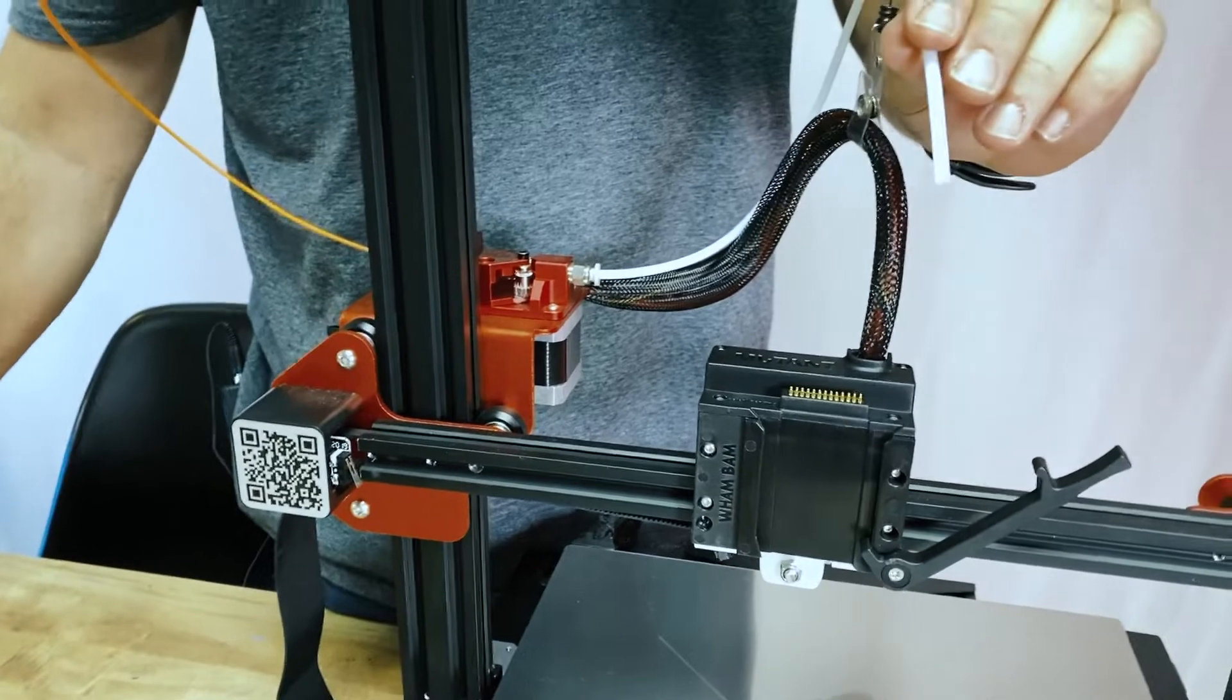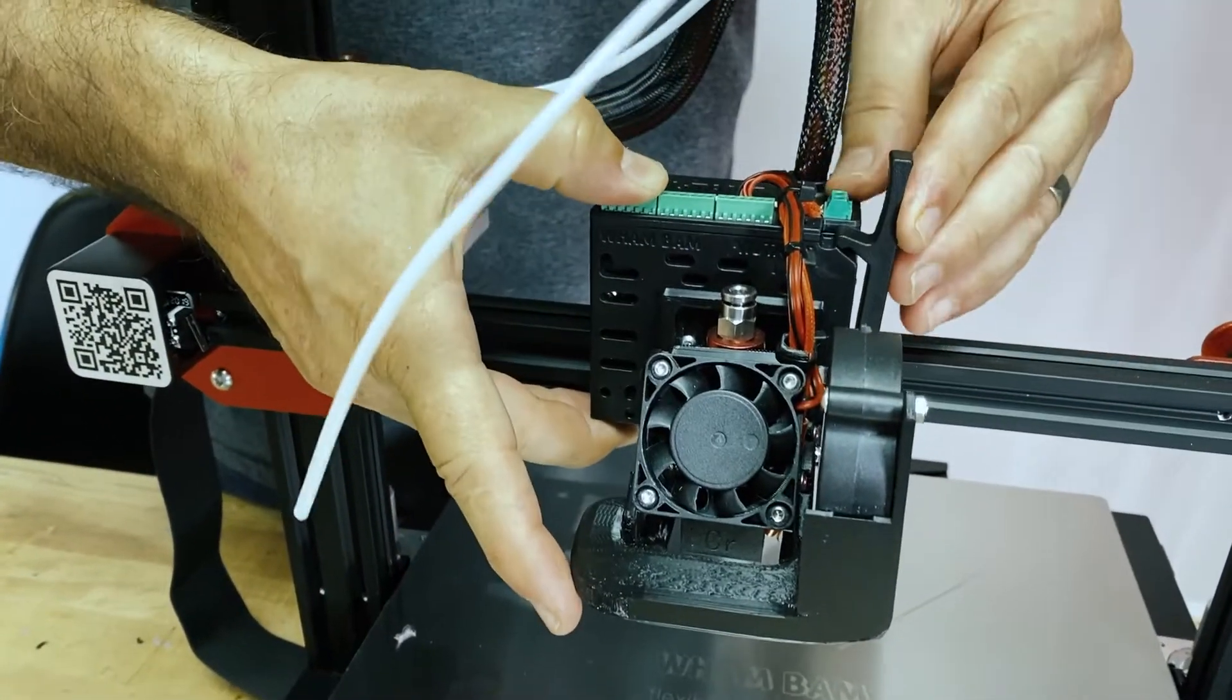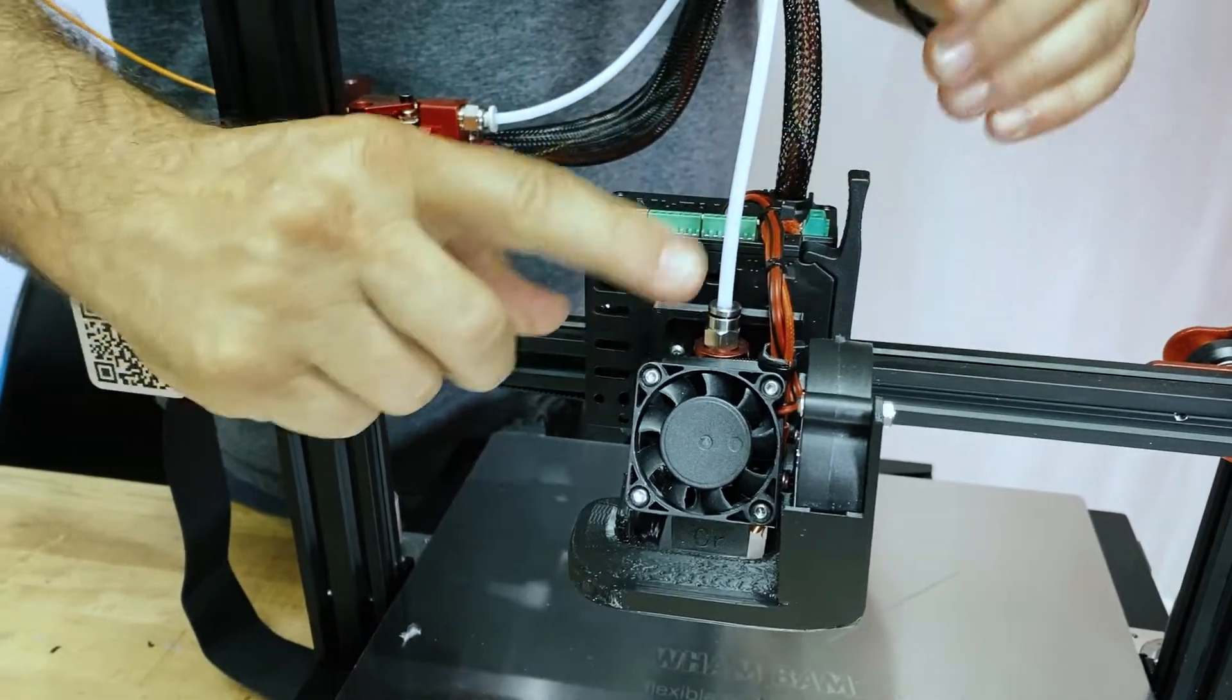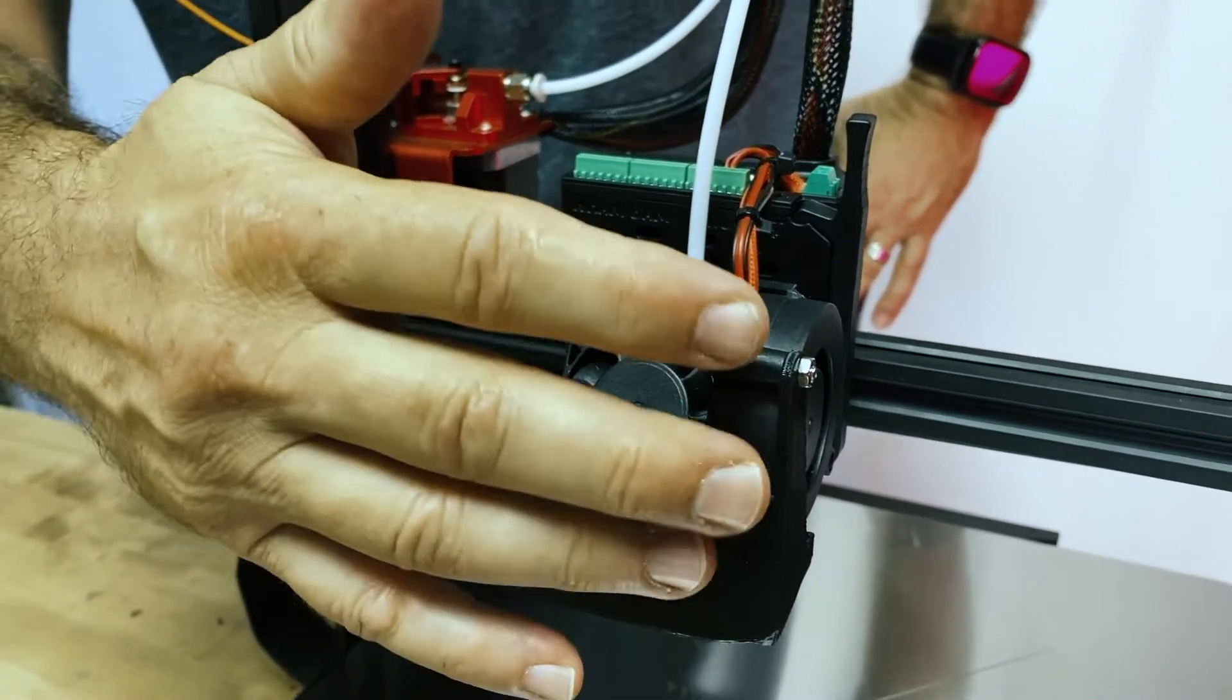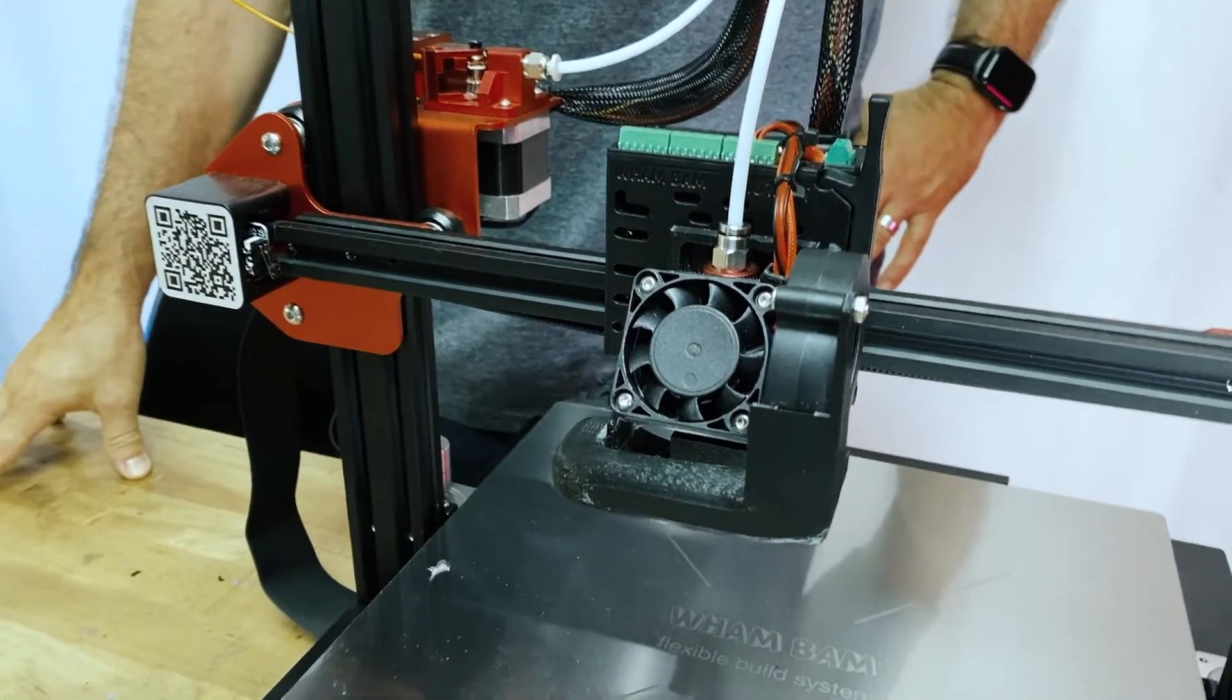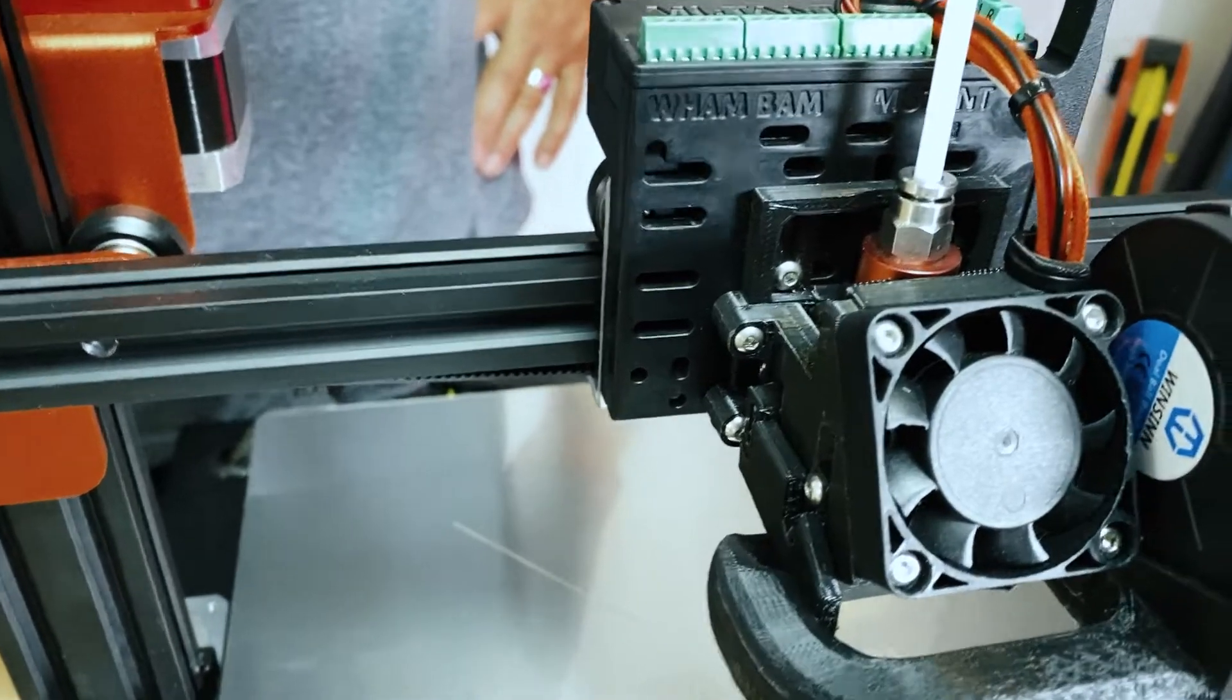In this case, we have an E3D style hot end with a very strong front fan and a 5015 part blower fan ready to go. So it's that fast to switch between hot ends and tools.